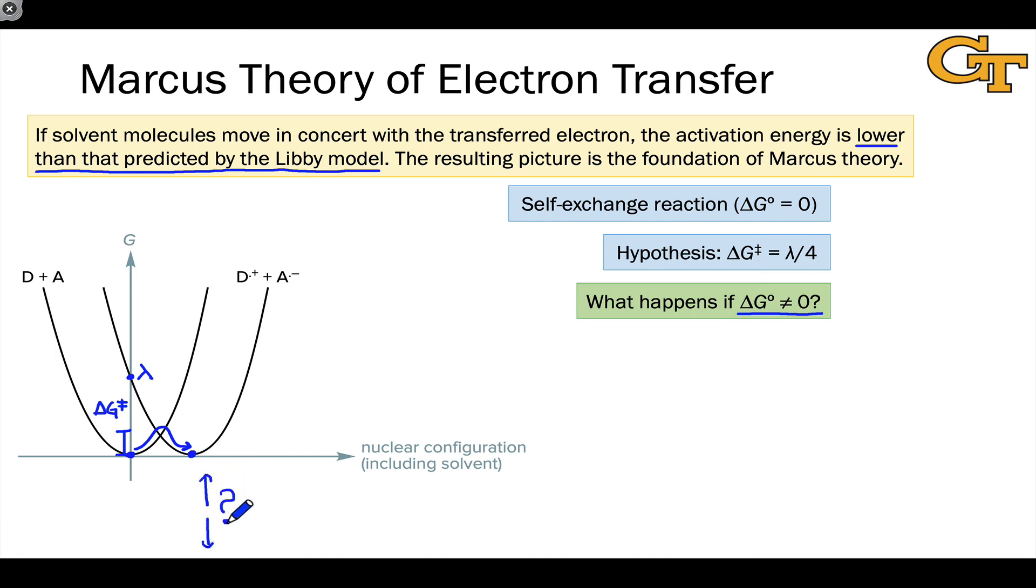What happens when we start moving this product potential energy surface up or down with respect to the ground state potential energy surface, particularly when we start moving down to very exothermic or exergonic reactions, interesting things start happening. We'll see the implications in the next video on Marcus theory.